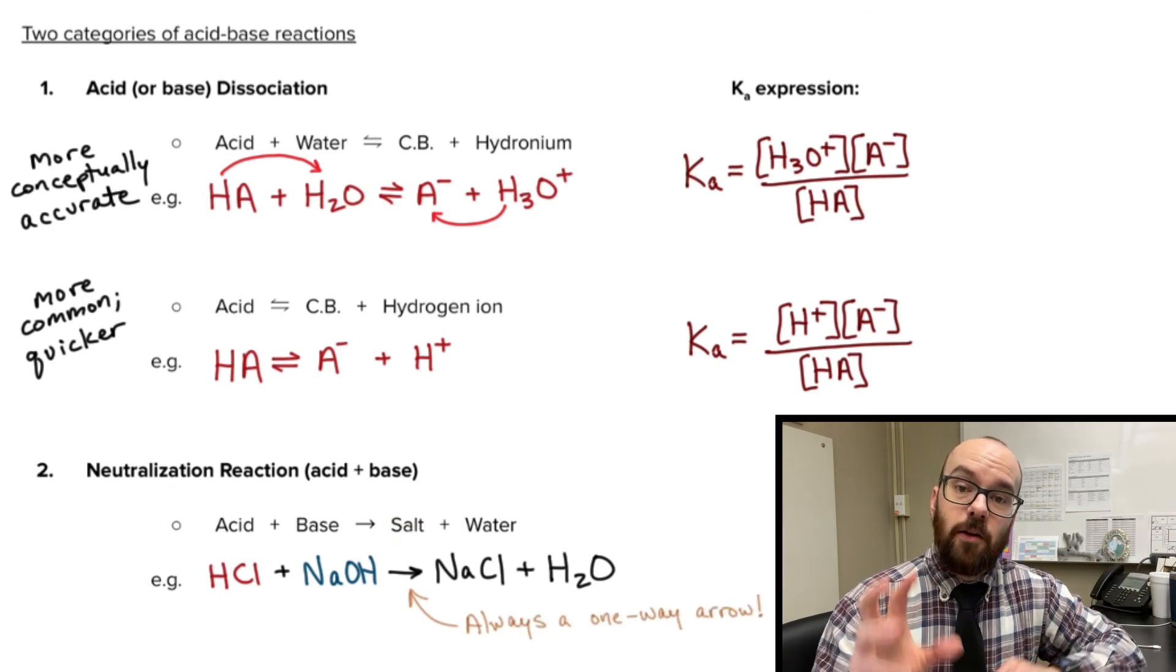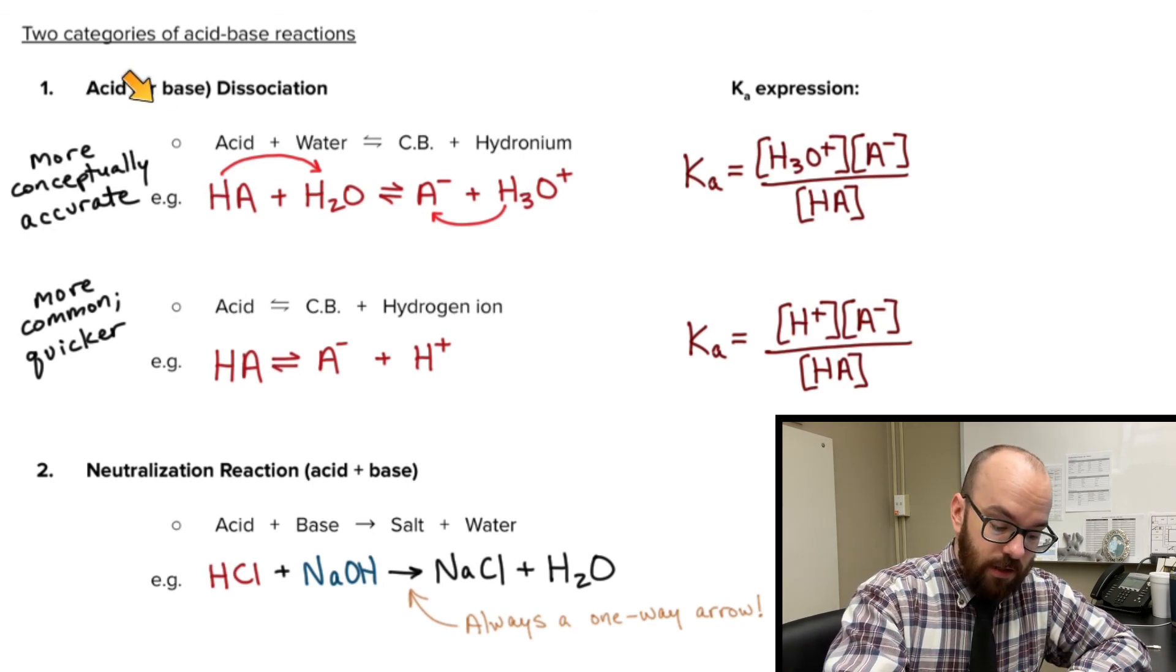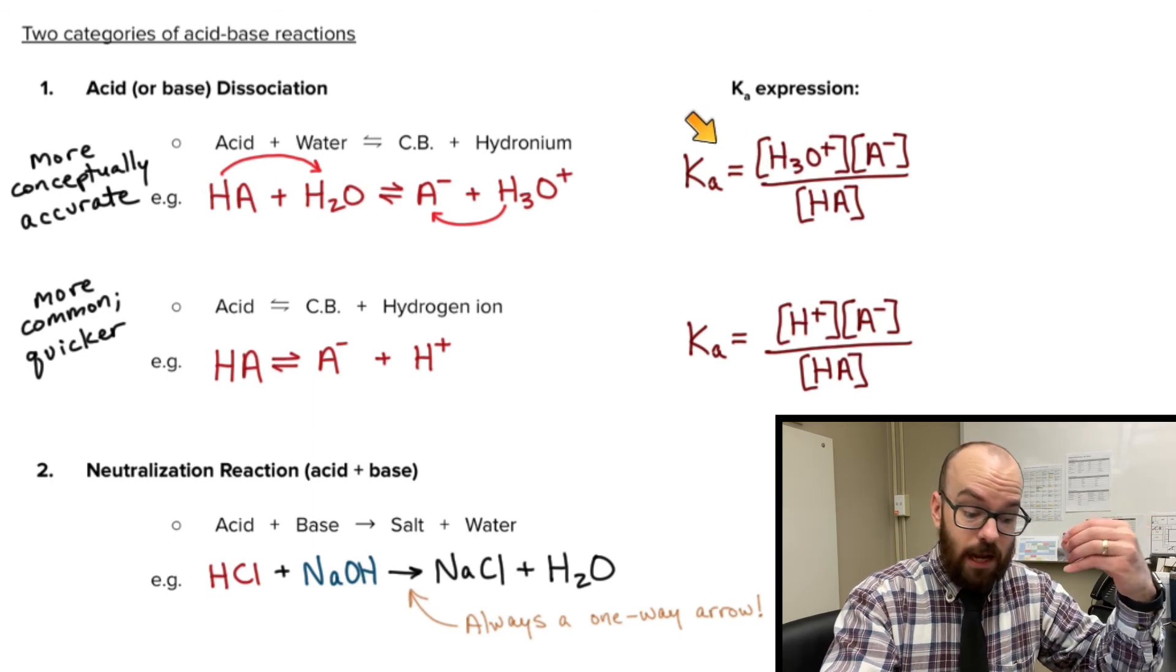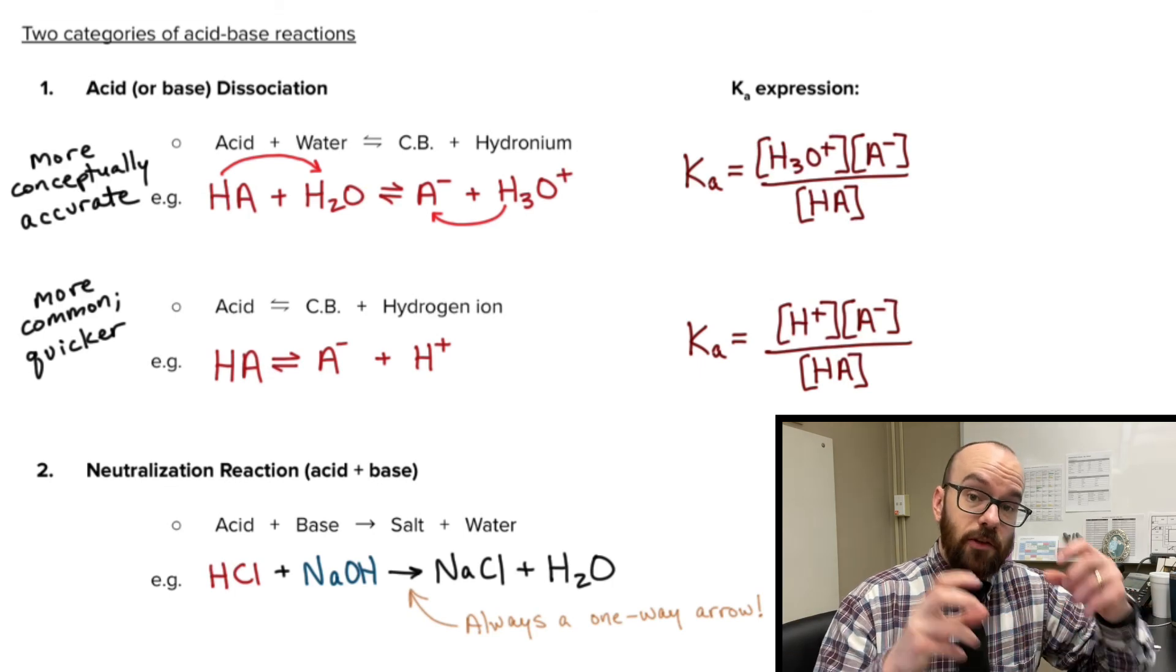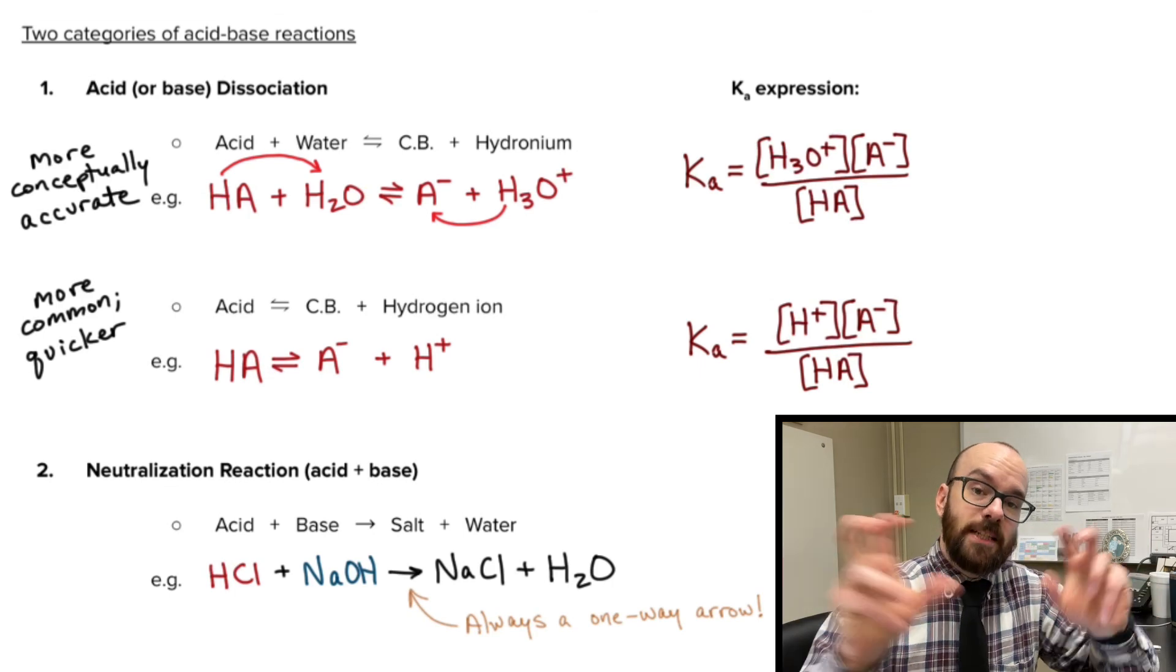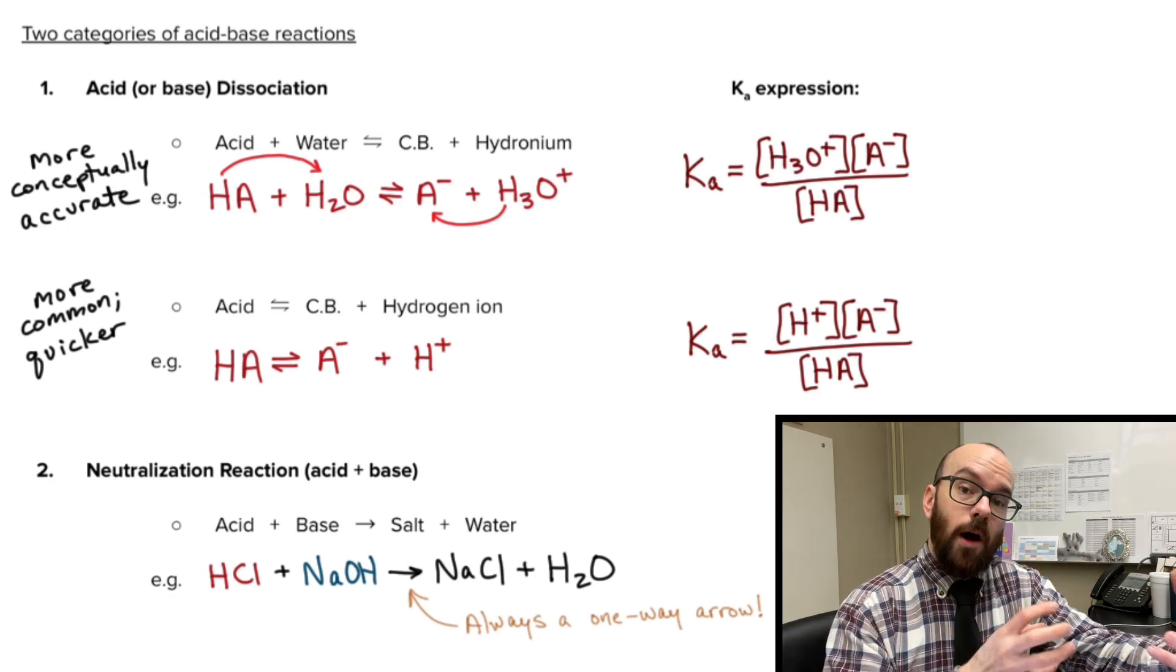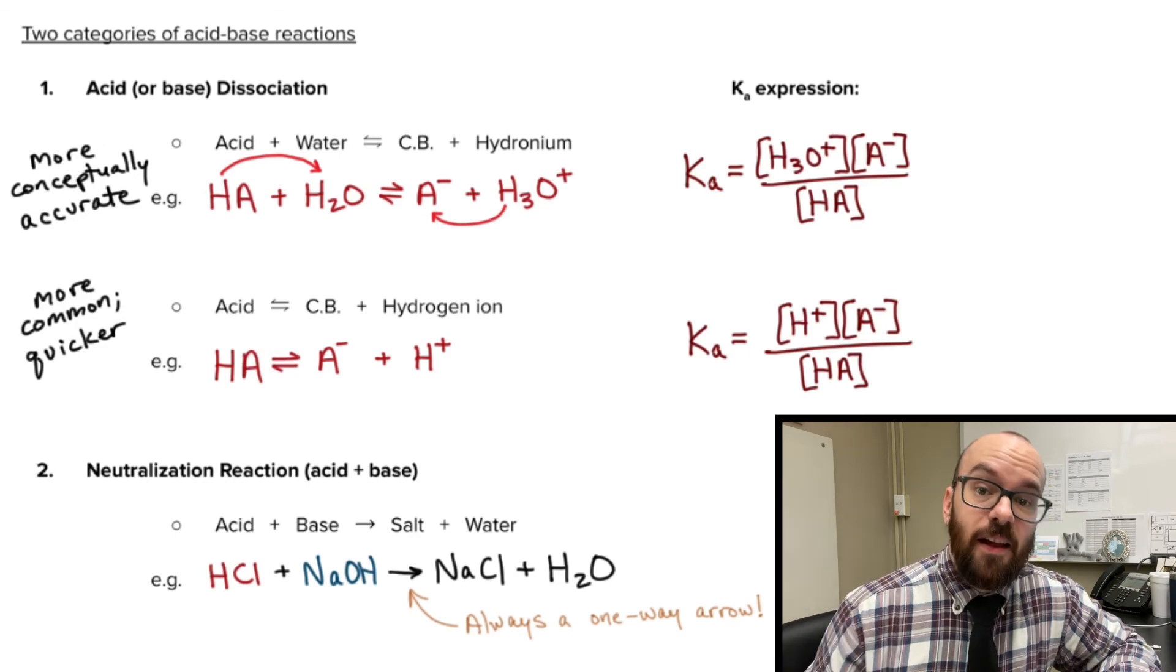So keep these two separate in your mind. Whenever we're looking at acids and bases, we'll have to do dissociation reactions. And whenever we see a Ka expression, that goes with a dissociation reaction, such as this right here or this right there. And we also have a neutralization reaction. That's when we take an acid and a base and we mix them together in order for them to react and neutralize each other. And we form a water and a salt as a result of that. So that's an intro to acids and bases. Thanks for watching.